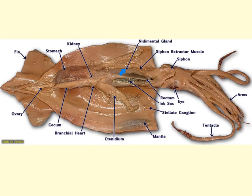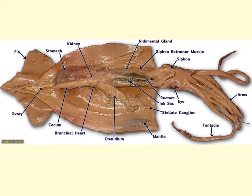The nidamental gland coats eggs in the female with a gel that gives them a protective cohesion. We can also see the location of the siphon, eyes, tentacles, and the mantle cavity. The ink sac is a unique feature of the squid; it releases a cloud of ink that contains the pigment melanin, providing that cloud of camouflage.